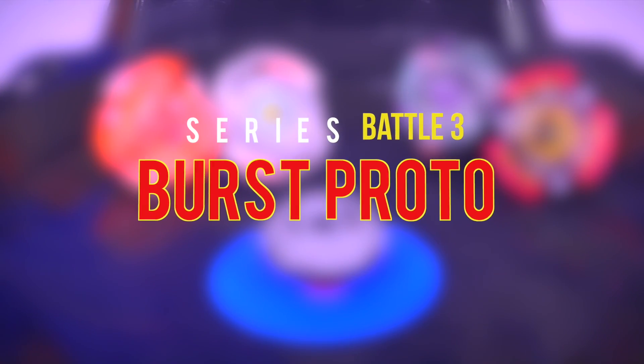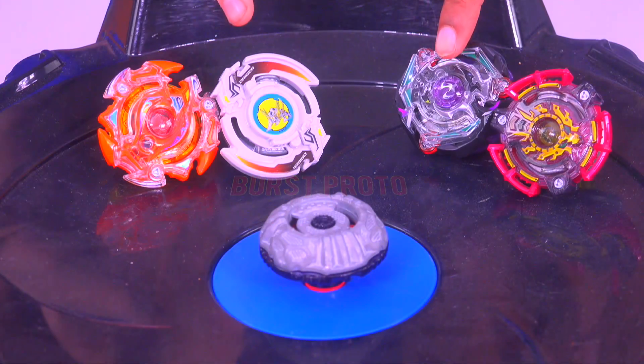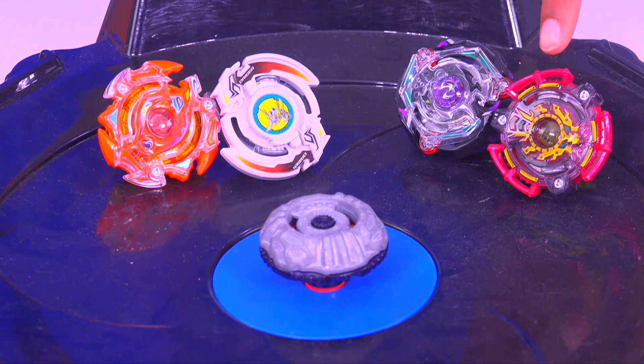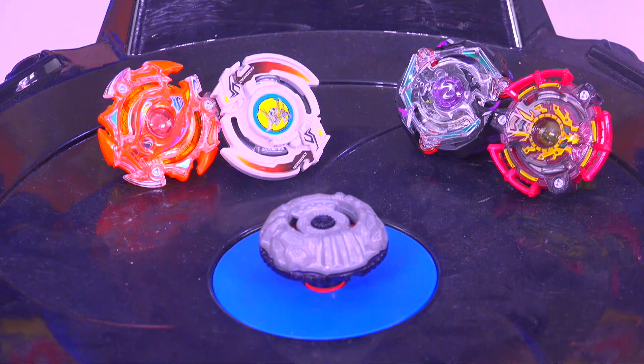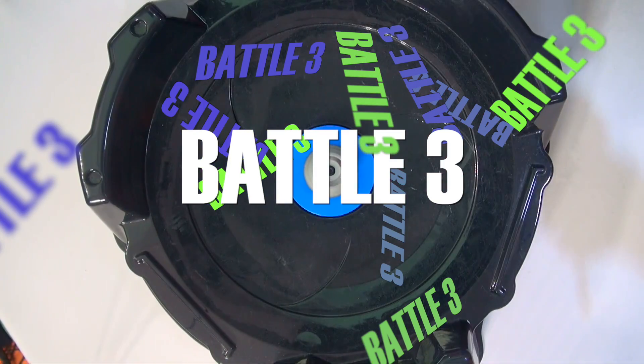So for battle 3 what we have is Infernal Ifrit and Drigger. And for his team what he has is Chris Satan and Evil Eye. And we'll be battling against Proto.